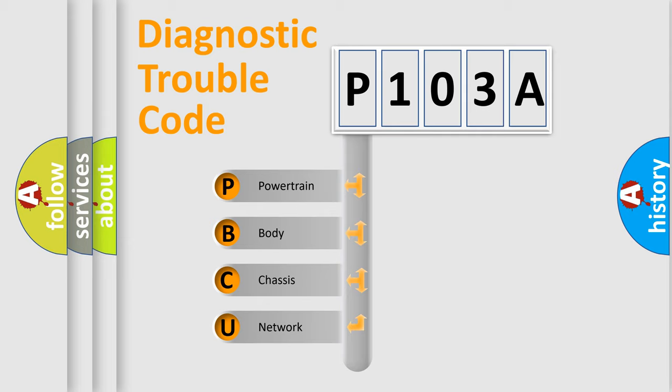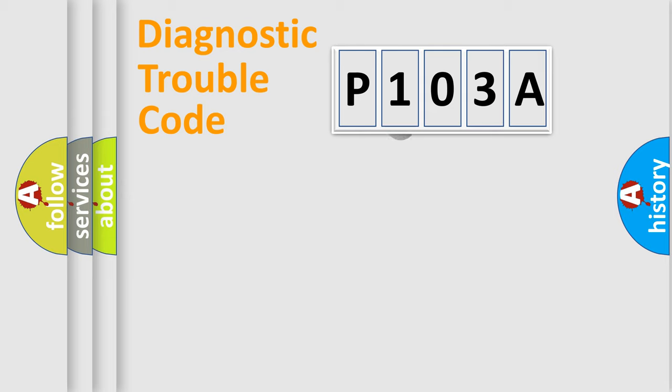We divide the electric system of automobile into four basic units: powertrain, body, chassis, and network. This distribution is defined in the first character code.